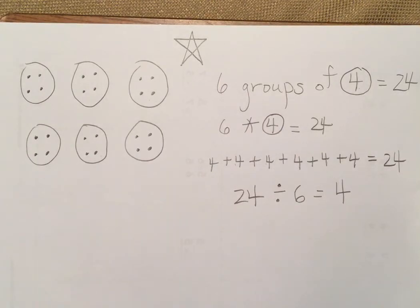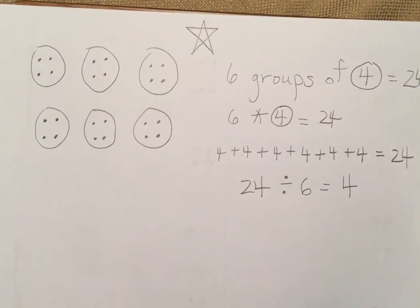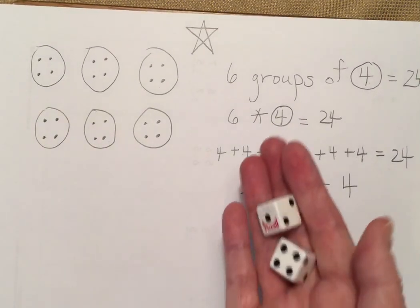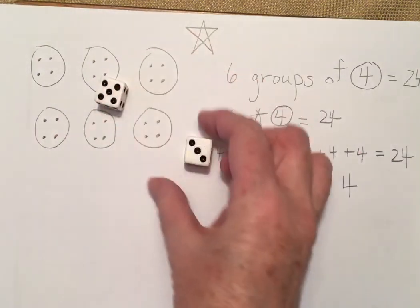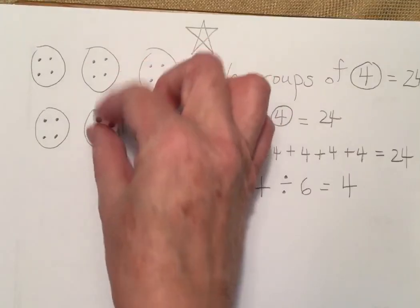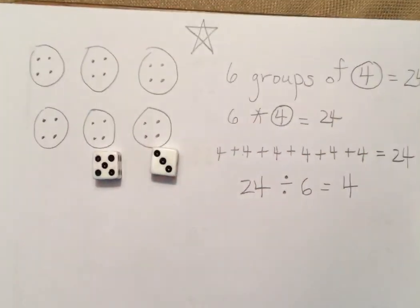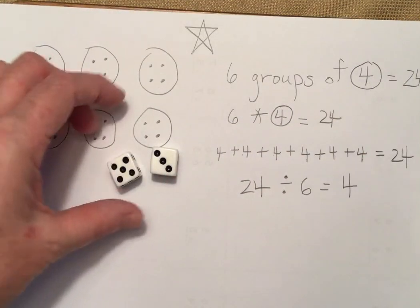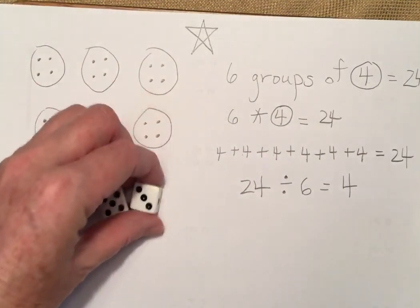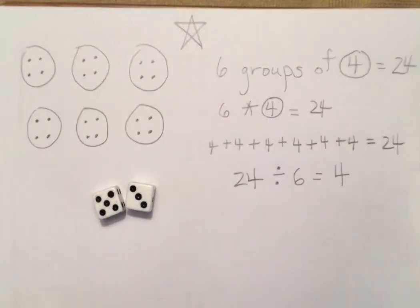So this is just a reminder of how to play circles and stars. Remember, you could do it with two dice — one die is going to be how many groups, and the second one would be how many stars inside each. This is a great way to practice your multiplication facts.